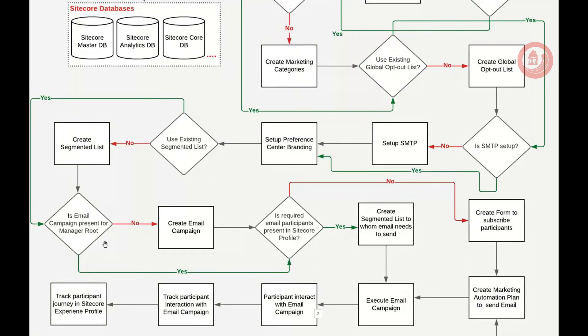If an email campaign is not present for the manager route, you are going to create one — it can be an automated email campaign run from your marketing automation, or if you are running manually you can create a regular email campaign. You can also assign participant details, and after that you can execute that particular email campaign. Going forward the user will start interacting with your preference center or your website, and from there you can start monitoring the user journey.